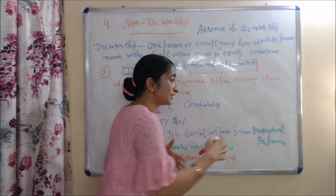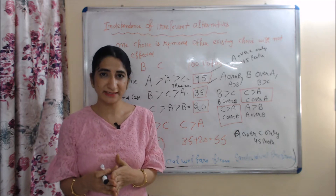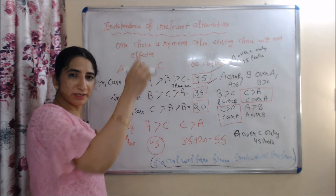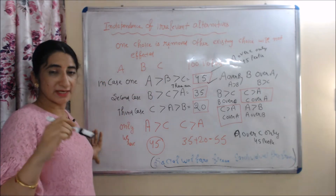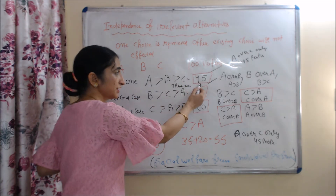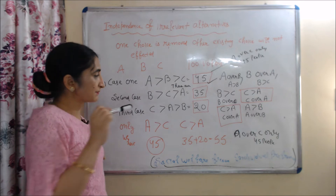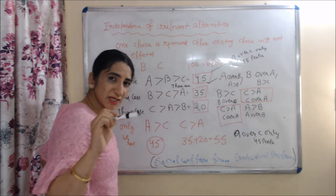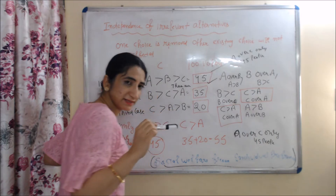To clearly understand this concept, we will see an example of how one condition is violated, using the fifth condition — independence of irrelevant alternatives. We have three candidates A, B, and C, and 100 voters. In case one, 45 people prefer A over B over C, so A leads with 45 votes. In case two, 35 people prefer B over C over A, so B has 35 votes. In case three, 20 people prefer C over A over B, so C has 20 votes.